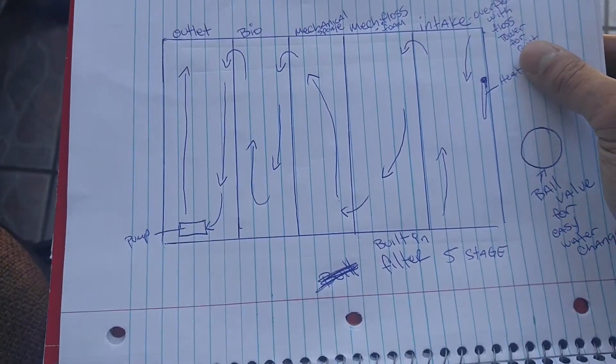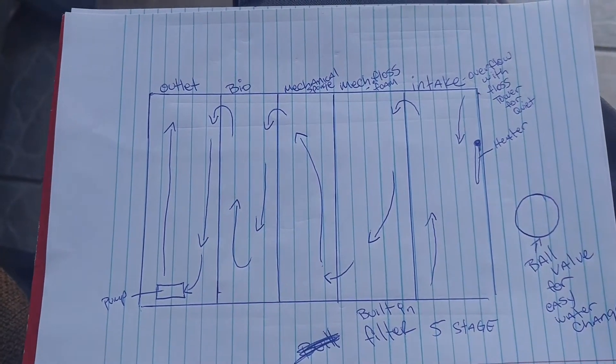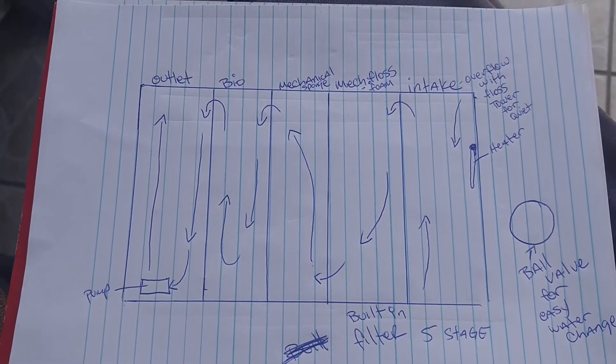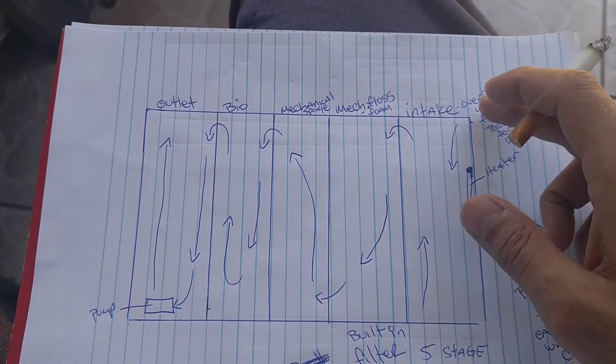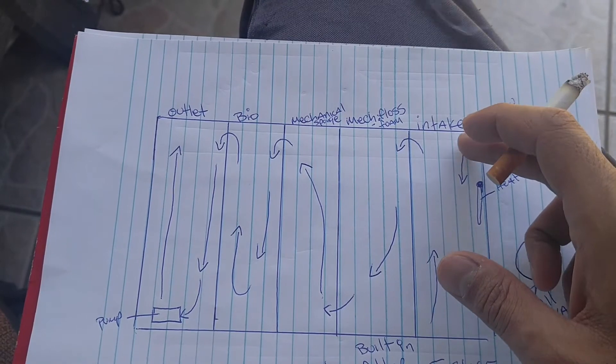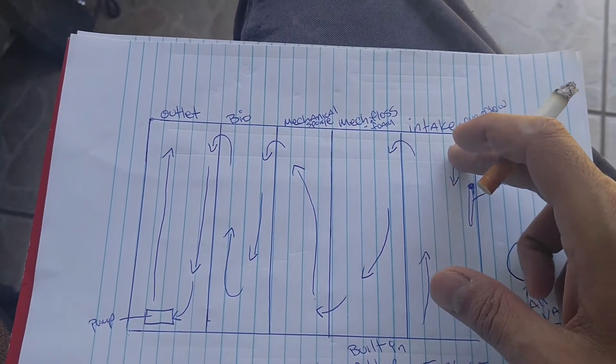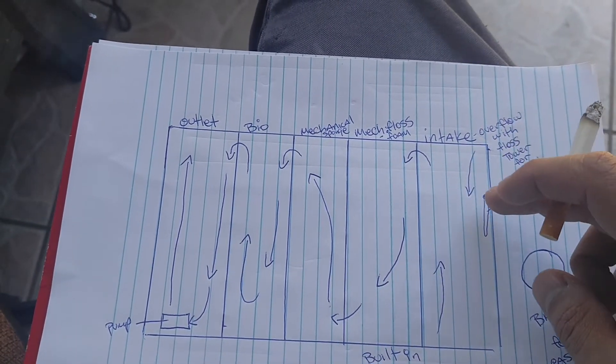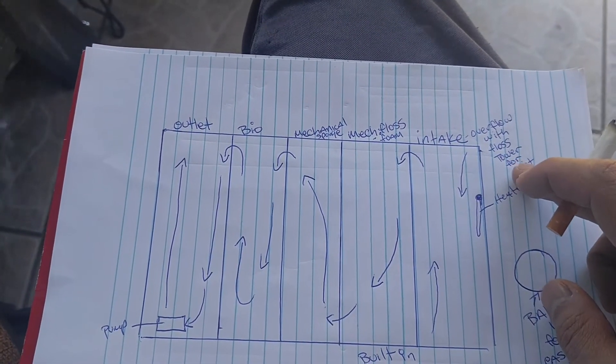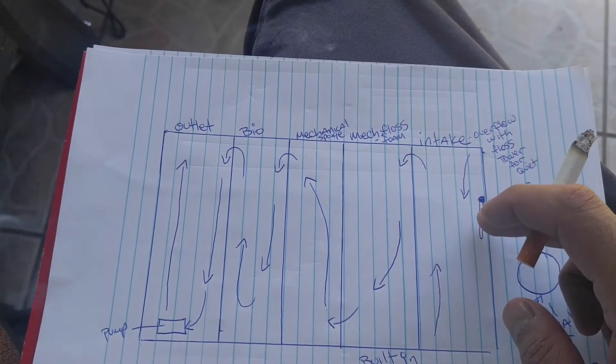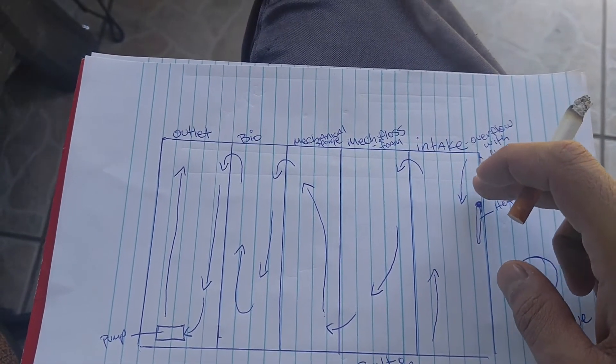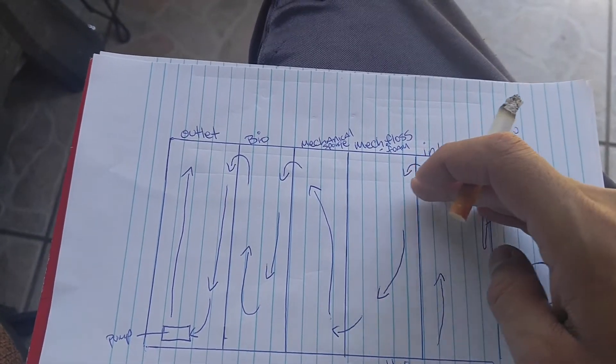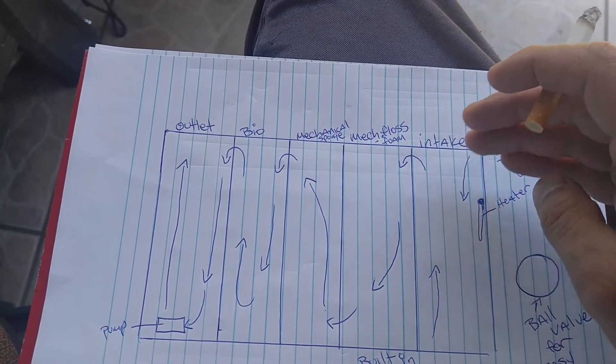On this page I have my five-stage filter, my built-in filter. So here's where the overflow of water from the tank is gonna enter. It's gonna go down. The water flow is gonna go up. This is where I'm gonna house the heater and the floss. I'm gonna have probably a piece of lighting diffuser here to hold up some floss to stop the splash so it's quiet.